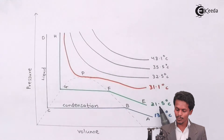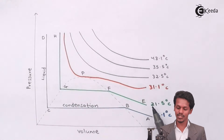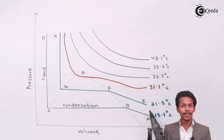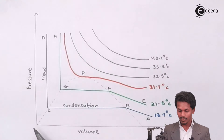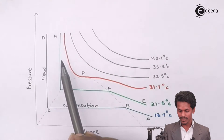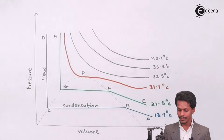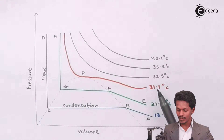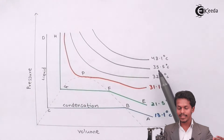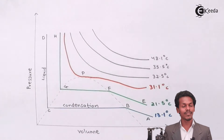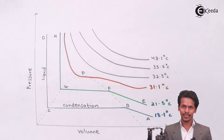The next curve is at 21.5 degrees Celsius — again a constant temperature — and by varying pressure and volume at that temperature, we get a curve above the A-B-C-D curve. Further curves are obtained at 31.1, 32.5, 35.5, and 48.1 degrees Celsius, each representing a graph at a particular constant temperature.